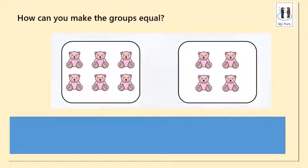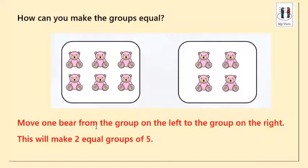For this question, we are asked: how can you make the groups equal? In the first group we've got six teddy bears, and in the second group we've got four. So they are unequal and we need to make the groups equal. We've only got those bears, so we can't add more. I can move one bear from the group on the left to the group on the right, and that will make two equal groups of five.